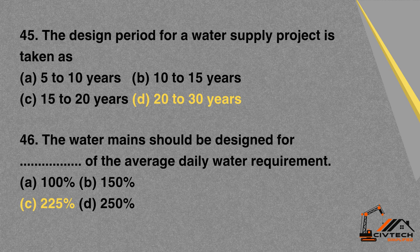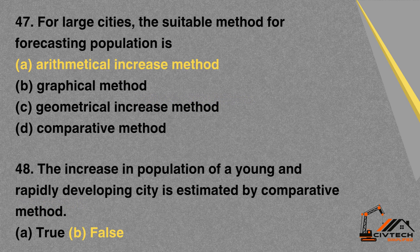MCQ 46: The water mains should be designed for what percentage of the average daily water requirement? A. 100%. B. 150%. C. 225%. D. 250%. Correct option: C. 225%.